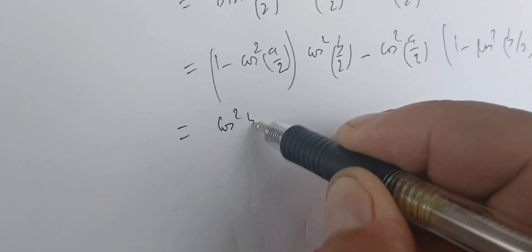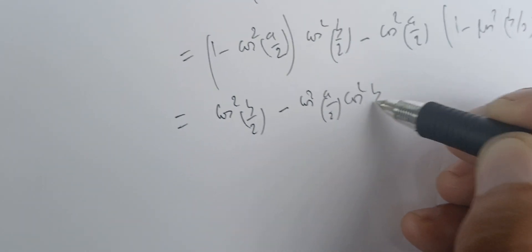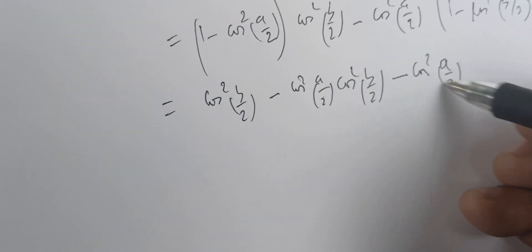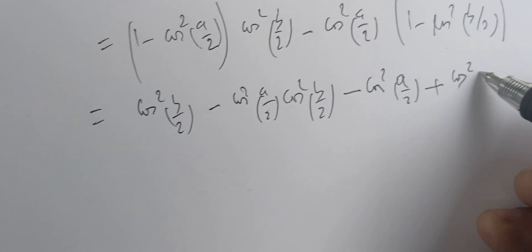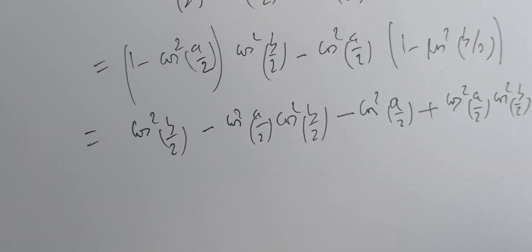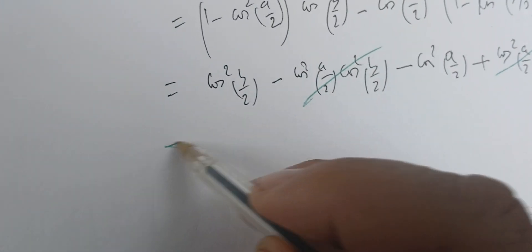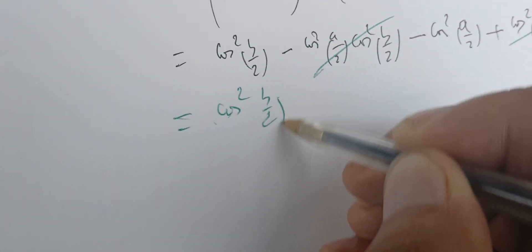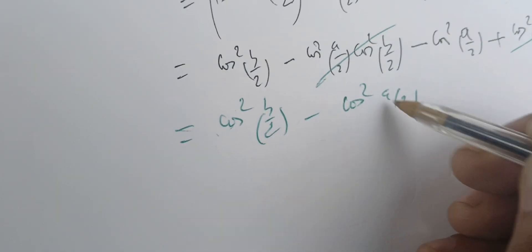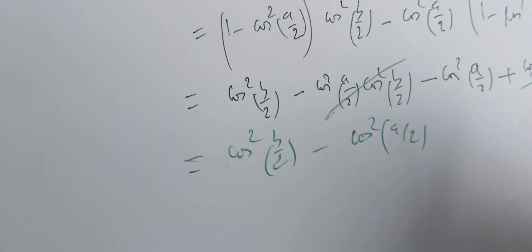Expanding this multiplication, we get cos²(b/2) minus cos²(a/2)·cos²(b/2) minus cos²(a/2) plus cos²(a/2)·cos²(b/2). The two middle terms cancel, leaving us with cos²(b/2) minus cos²(a/2).